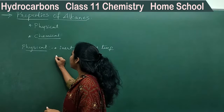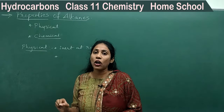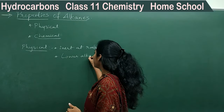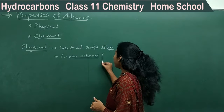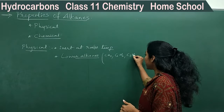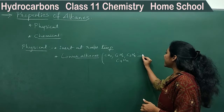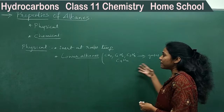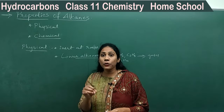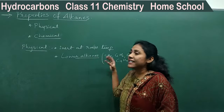Coming to the second factor: lower alkanes are those with fewer carbon atoms — for example, methane (CH4), ethane (C2H6), propane (C3H8), and butane (C4H10). These are called lower alkanes. Lower alkanes always exist as gases in nature. We call it methane gas; butane is used in cooking gas cylinders, and butane always exists as a gas. The lower members, C1 to C4, always exist as gases.